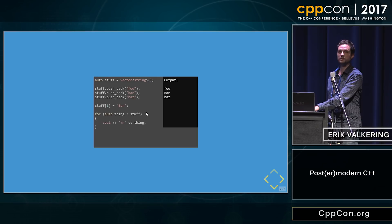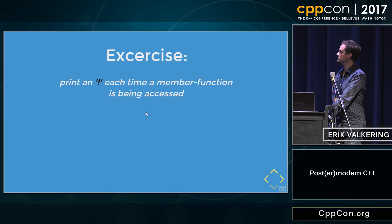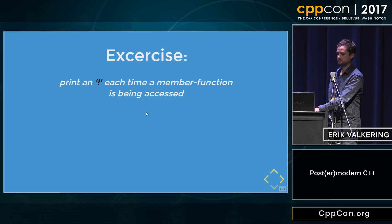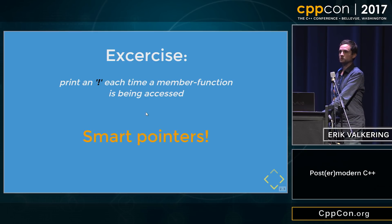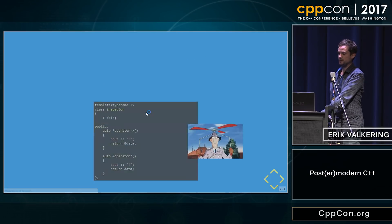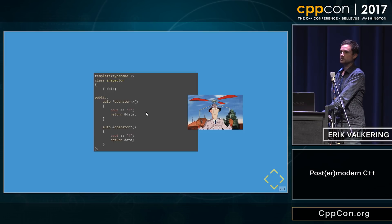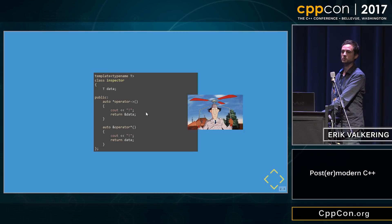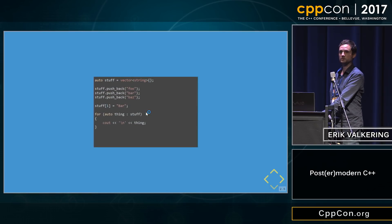This will be the output. Then we have an exercise: we want to print an exclamation mark every time we access the member function. One solution for that is by using smart pointers. For example, we can define the class template inspector, in which we simply implement the operator arrow and the dereference operator. We print the exclamation mark and forward to the member function, and that gives the results.